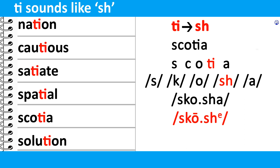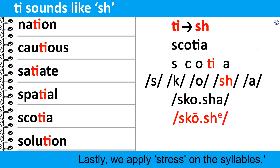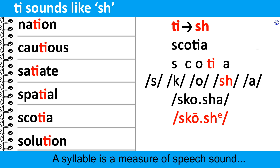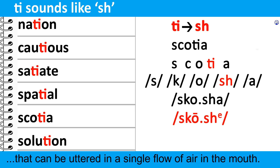The O sound in Scotia is a long O. Lastly, we apply stress to get the final word sound. In a two-syllable word, only one syllable is stressed or strong, while the other remains unstressed or weak. This is the rule of the English language. Here, the stress is on 'sco', the first syllable. Therefore, the sound of A in the second syllable becomes weak. Sco-sh — Scotia.